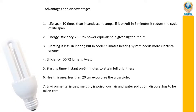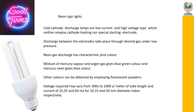Now we will see neon signs. Neon signs produce the characteristic glowing light we commonly see. Cold cathode discharge lamps are low current and high voltage types, which neither employ cathode heating nor special starting electrodes. The discharge between electrodes takes place through the desired gas at low pressure.